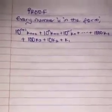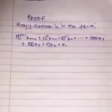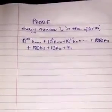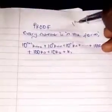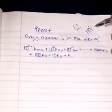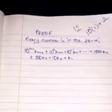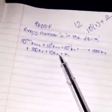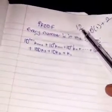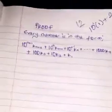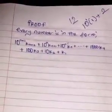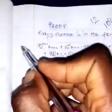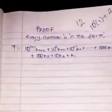Every number can be represented in the form: 10 raised to the power (n+1) times k_n+2, plus 10 raised to the power n times k_n+1, and so on. For example, 12 would be 10 times k2 plus k1, where k2 is 1 and k1 is 2. This representation is used for every number, and we take it modulo 11 to derive the rule.